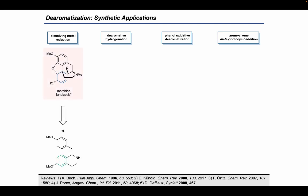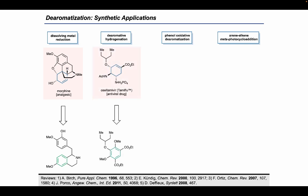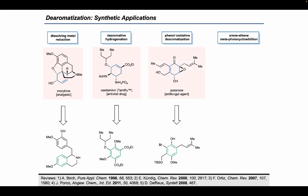These dearomative transformations have been critical components in the planning and synthesis of complex and biologically relevant compounds. For example, Birch reduction for the synthesis of morphine, dearomative hydrogenation utilized in the construction of Tamiflu, phenol oxidative dearomatization in the assembly of antifungal gesturon, and arene-alkyne meta-photocycloaddition in the forging of the complex betadranic acid ring system.